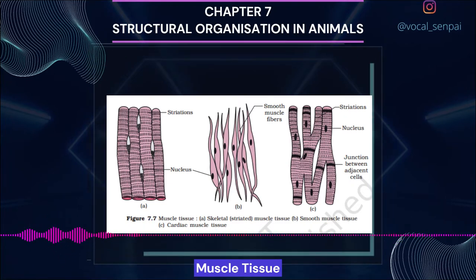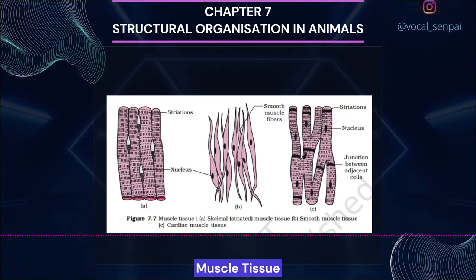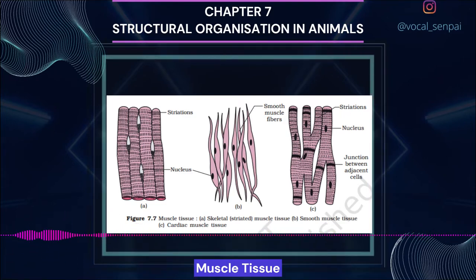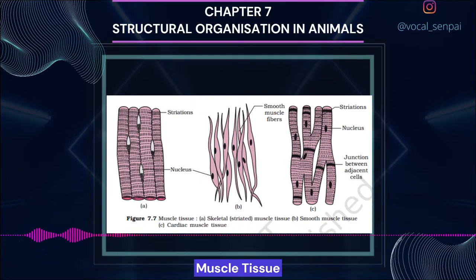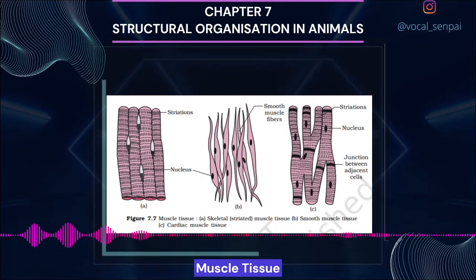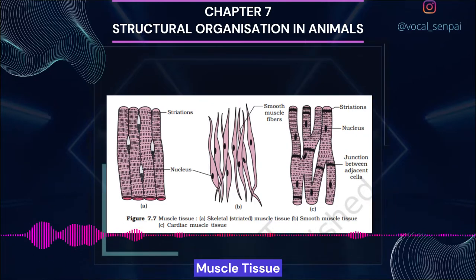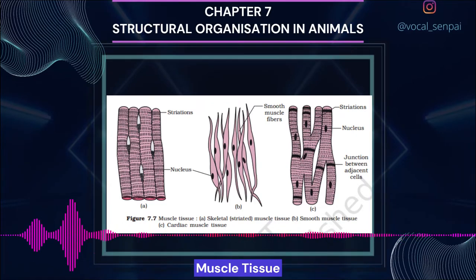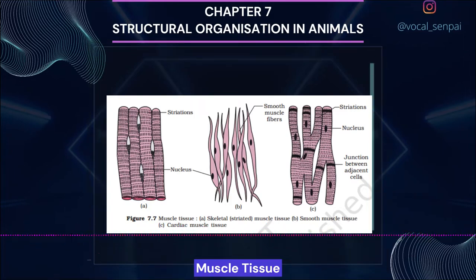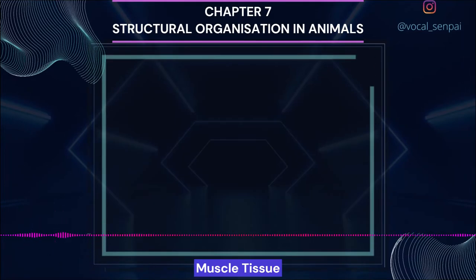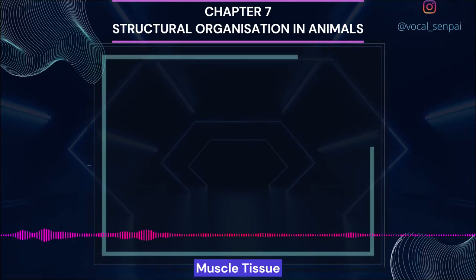Cardiac muscle tissue is a contractile tissue present only in the heart. Cell junctions fuse the plasma membranes of cardiac muscle cells and make them stick together (figure 7.7c). Communication junctions called intercalated discs at some fusion points allow the cells to contract as a unit — when one cell receives a signal to contract, its neighbors are also stimulated to contract.